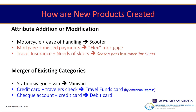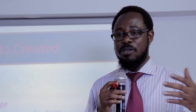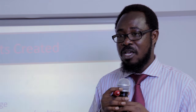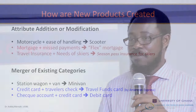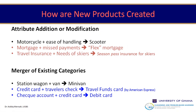More combination examples: station wagon plus a van gives a minivan; credit card plus traveler's check gives a travel funds card by American Express; check account plus credit card gives a debit card. Some companies in Ghana have recognized that many people have relatives abroad and want to remit money. They've created a debit card system where you create an account locally, post the card to relatives abroad, and they can retrieve the funds — a travel card system that works both locally and internationally.